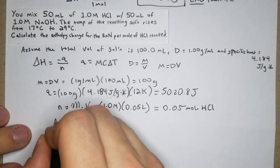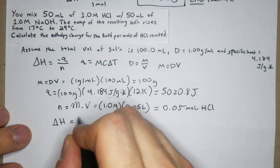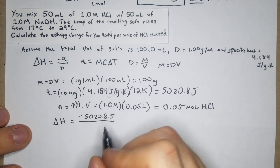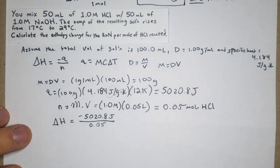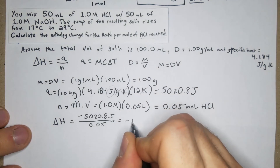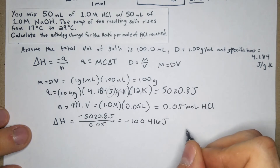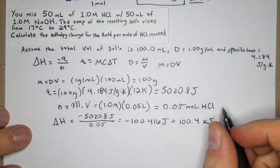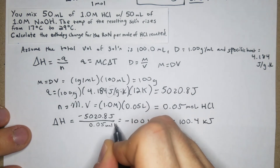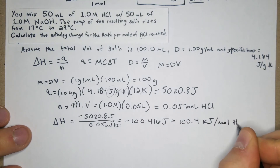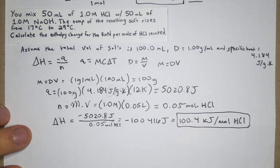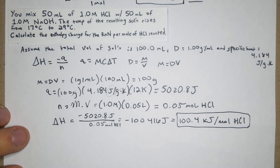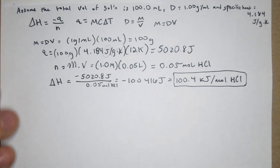Now we plug into ΔH = −q/n: −5020.8 J / 0.05 mol = −100,416 J/mol. Converting to kilojoules gives −100.4 kJ/mol of HCl. That's what the question asks for — enthalpy change per mole of HCl reacted. Writing out the full equation isn't necessary here.